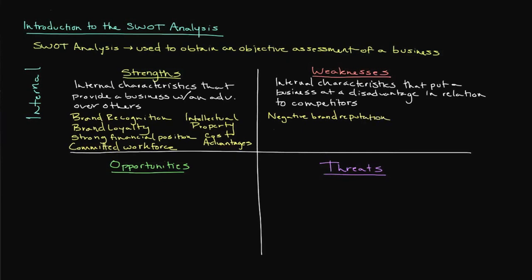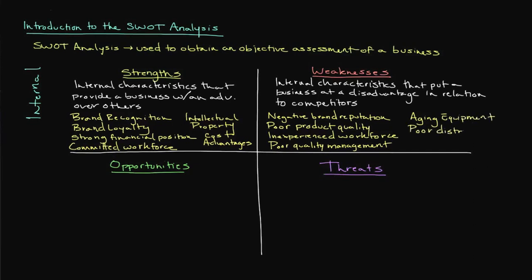Weaknesses often include negative brand reputation, poor product quality, an uncommitted workforce, inexperienced or poor quality management, aging equipment and technology, poor distribution networks, and even an uncomplimentary organizational structure. Notice that like strengths, weaknesses represent internal characteristics, meaning they can be controlled by the business to some extent. Consider the impact of a poor distribution network — even if the business produced goods and services that were in demand, it would have little significance if those goods and services couldn't be offered in a way that consumers could readily purchase them.